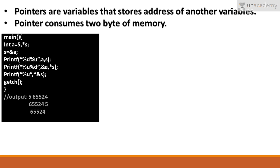Pointers are variables that store the address of another variable. Pointers consume 2 bytes of memory if they are of int type, 4 bytes if of float type, and 1 byte if of char type. So the memory consumed depends on the data type being used with the pointer.